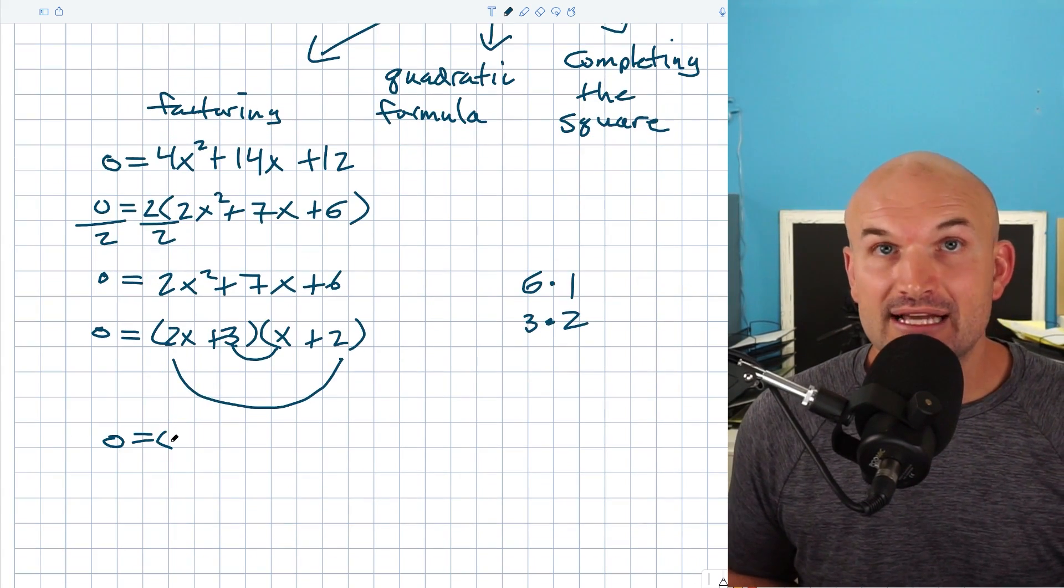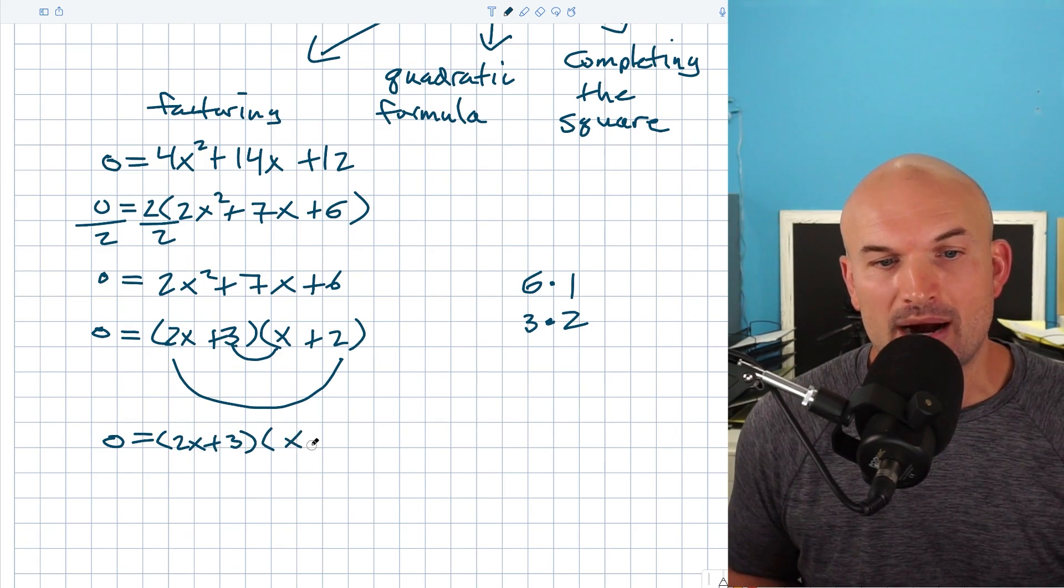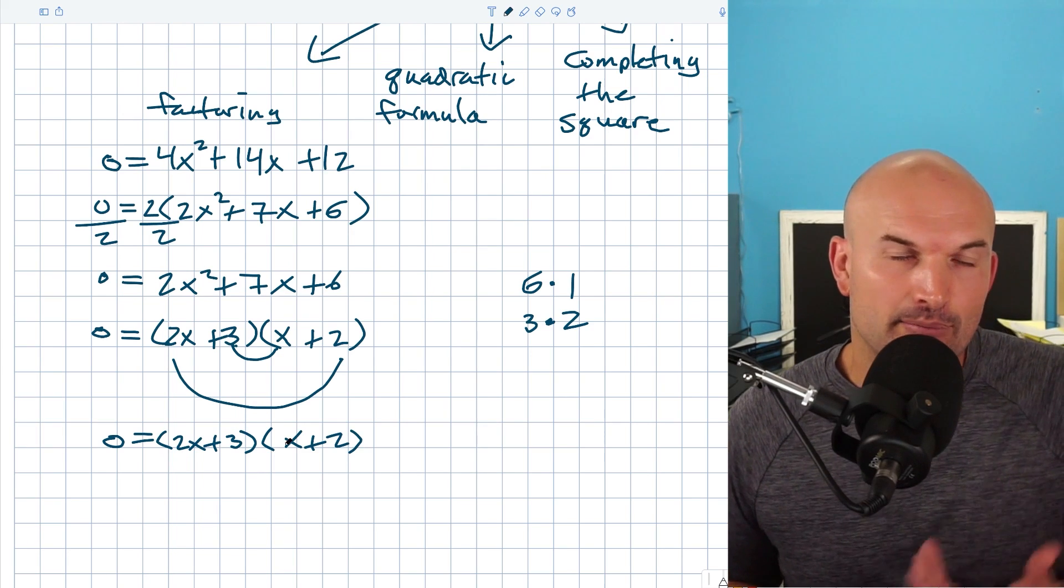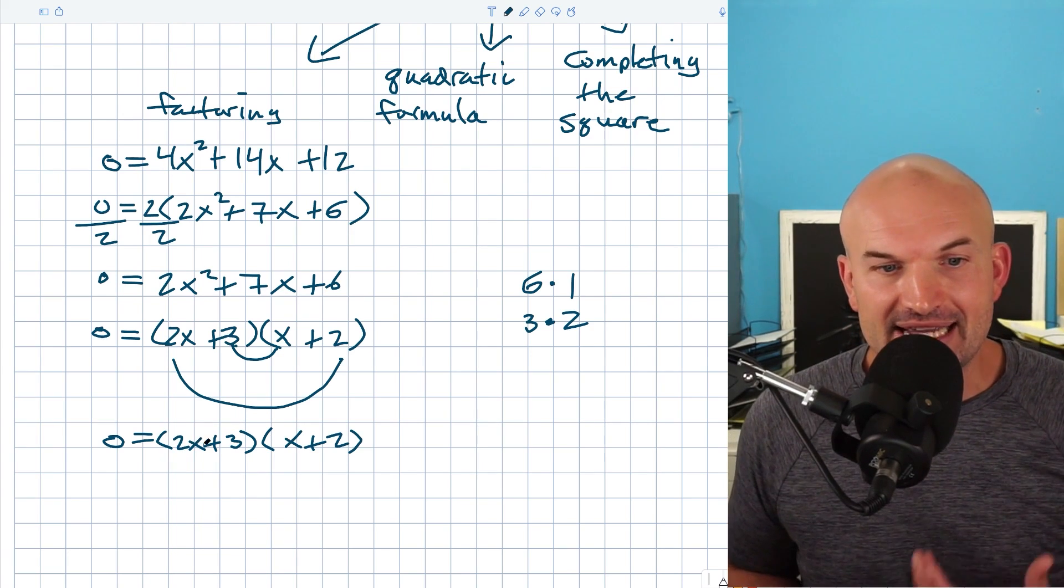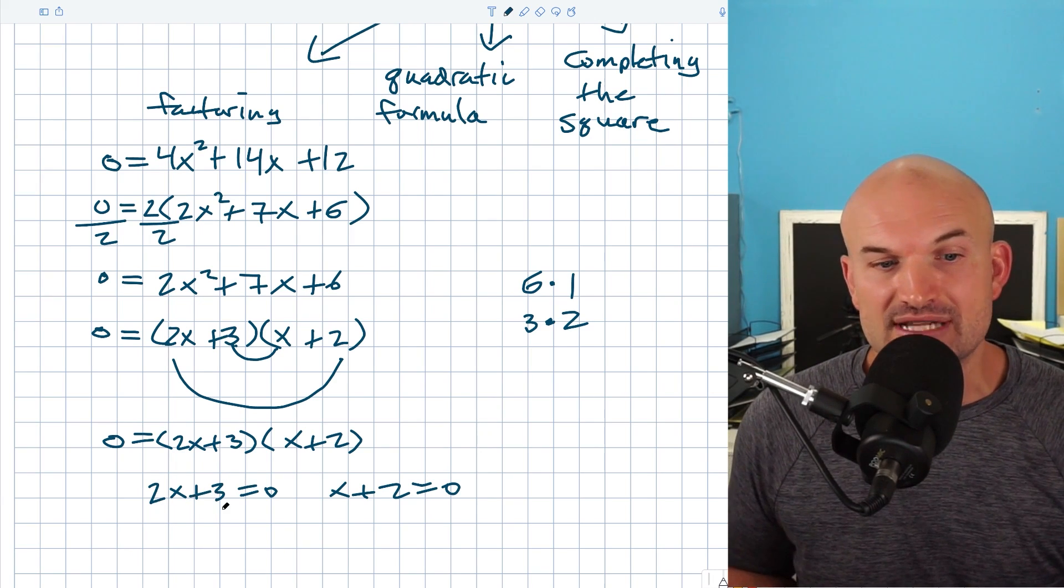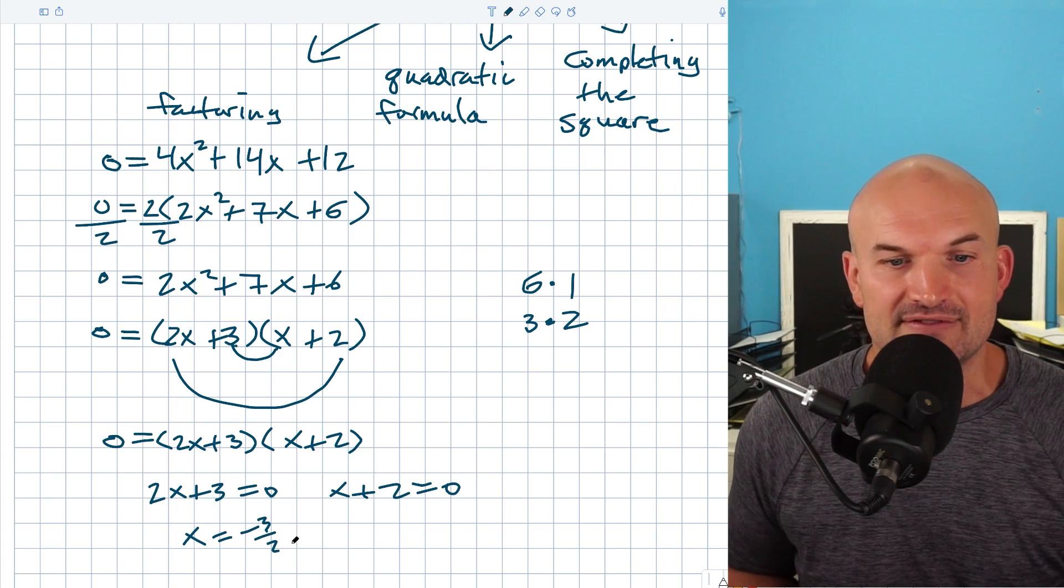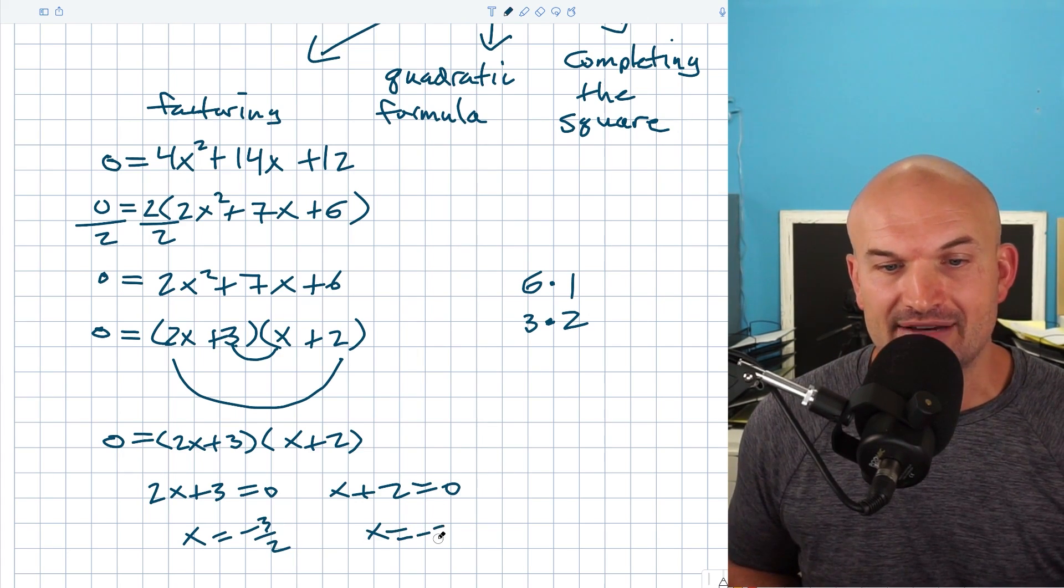So now that we have our factored form, the great thing about solving a quadratic by factoring is now you can use what we call the zero product property. And basically what that states is whenever you have a product equal to zero, you can set each of those factors equal to zero to solve. Then you can solve using inverse operations. So I can subtract the 3, divide by 2, and x is going to equal -3/2. Over here, I can just subtract the 2, and x equals -2.